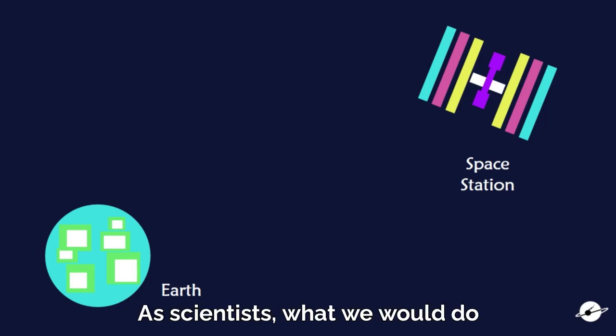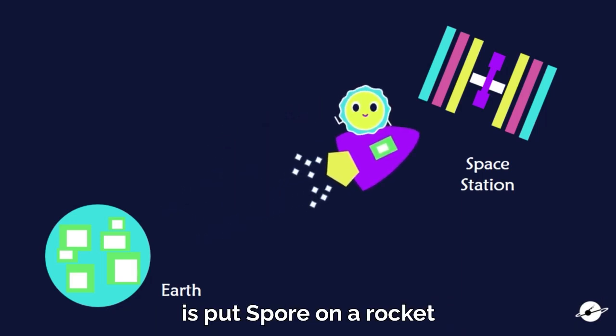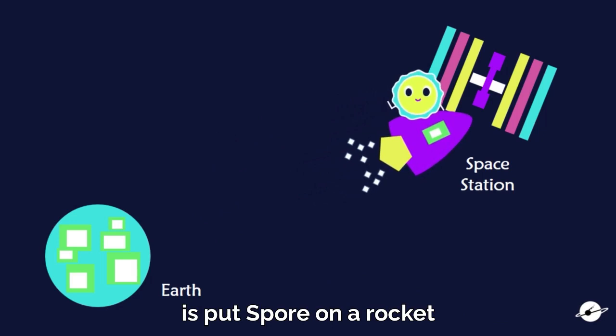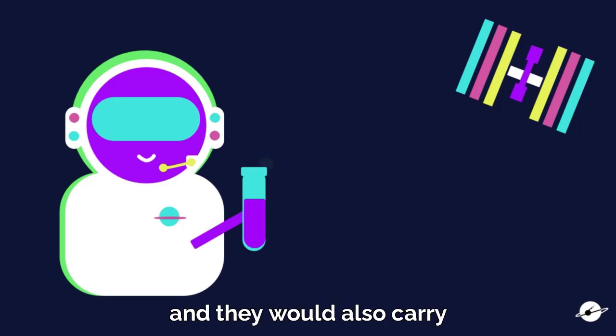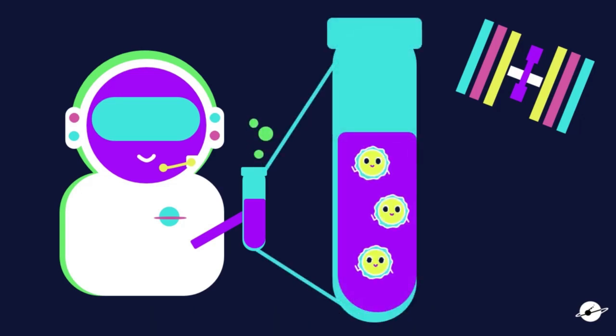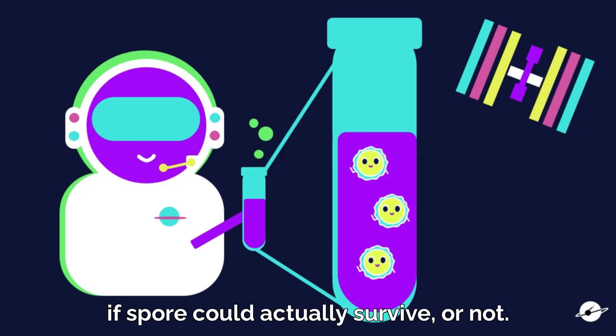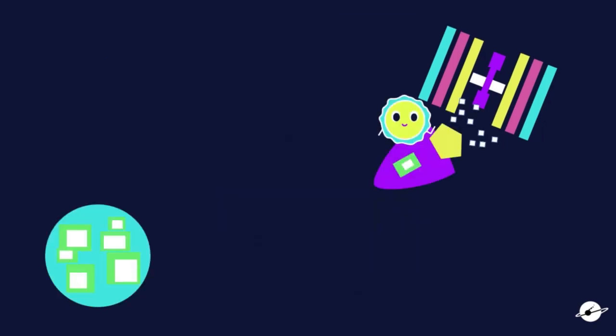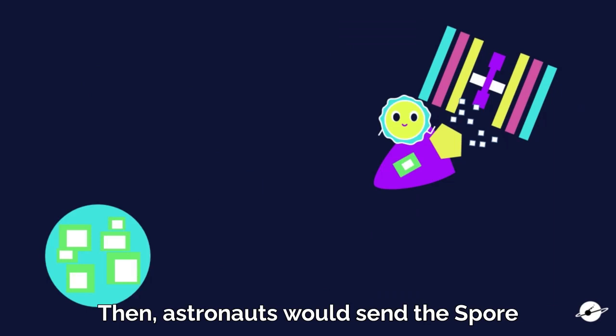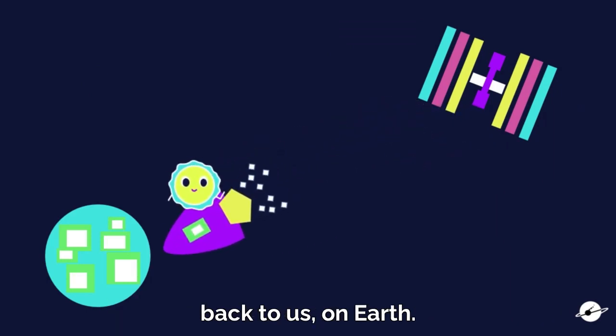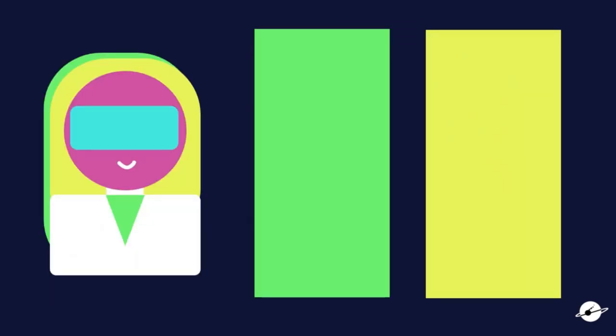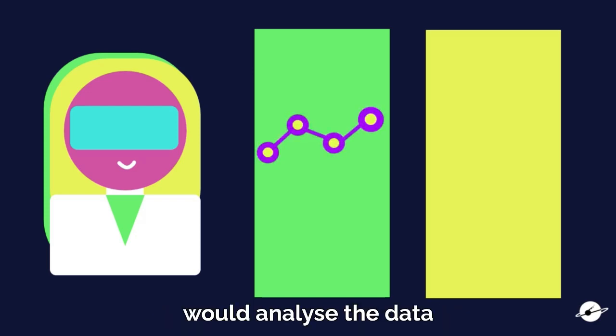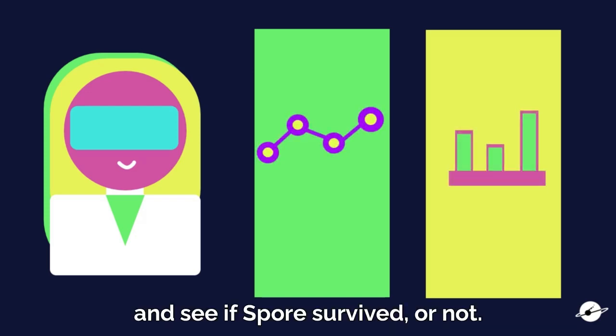As scientists, what we would do is put spore on a rocket and send it to the space station. In the station, astronauts would help us and they would also carry scientific experiments to test if spore could actually survive or not. Then, astronauts would send the spore back to us on Earth. And on Earth, space microbiology scientists would analyze the data and see if spore survived or not.